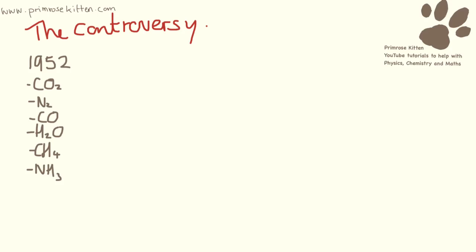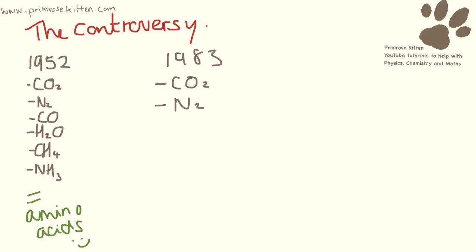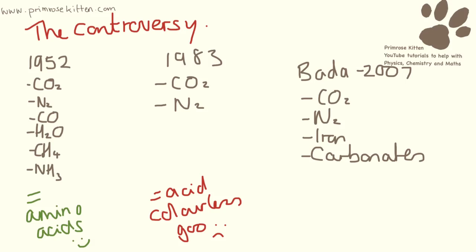The controversy starts because in 1952, when Milo and Nure did the experiments, those are the gases they used. However, in 1983, a better understanding of what the early atmosphere looked like meant they repeated the experiment with just carbon dioxide and nitrogen, which was thought to be more representative of the early atmosphere. Unfortunately, they didn't get any amino acids. Then in 2007, BARDA repeated the experiments with carbon dioxide, nitrogen, iron, and carbonates. The problem in 1982 was that the solution was really, really acidic, and that acidity was destroying or preventing the production of amino acids. When you add iron and carbonates, it removes the acidity from the solution, allowing amino acids to be produced.